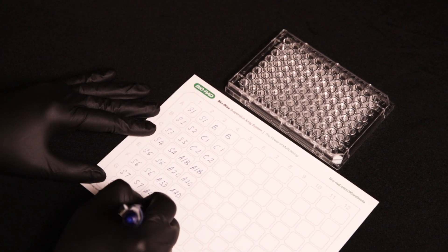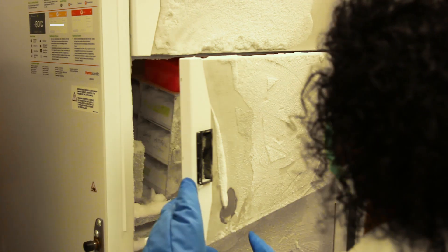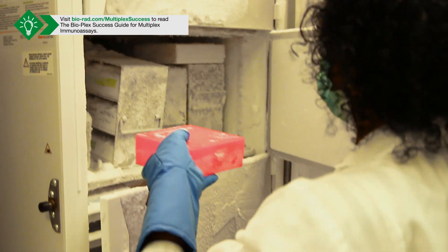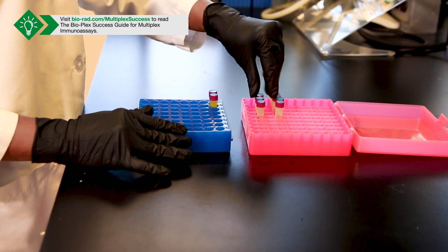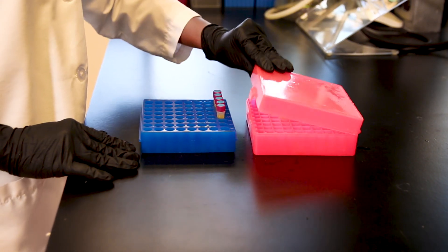Always run your standards, blanks, and samples in duplicate or triplicate. Move the samples to another standalone box or rack in the freezer. This step will make it easy to remove the entire box or rack when it is time to run the assay instead of sorting through the samples.